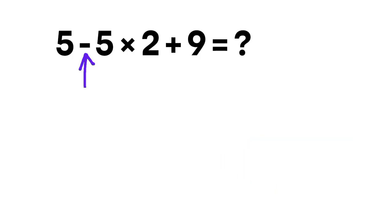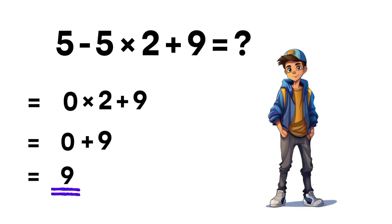Most people start with the subtraction. They say 5 minus 5 equals 0. So the expression becomes 0 times 2 plus 9. Then they continue. 0 times 2 equals 0, and 0 plus 9 equals 9. So they confidently say the answer is 9.